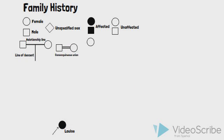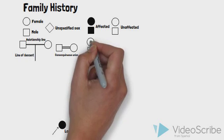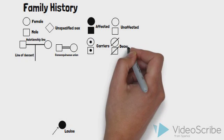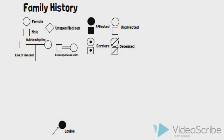Two horizontal lines linking two symbols indicates that the couple has at least one ancestor in common and is therefore consanguineous. In the case of autosomal recessive conditions, where two copies of a mutant allele are required for disease expression, individuals with only one copy of a disease-associated allele are called carriers, and are represented by placing a dot in the center of the symbol. A line through a symbol indicates that an individual is deceased. The standard in medical genetics is to obtain at least a three-generation family history.